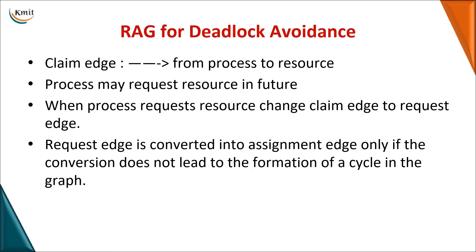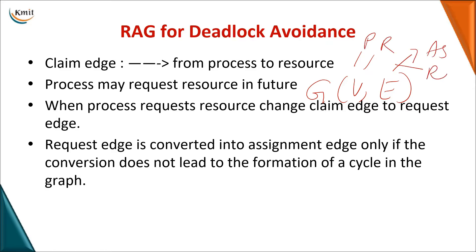Now for the resource allocation graph, we have already seen a graph with vertices and edges. In the vertices we have processes and resources, and in the edges we have assignment edges and request edges. Other than these, we have one more edge known as a claim edge, which is indicated with a dotted arrow. The claim edge goes from a process to a resource, indicating that in the future this particular process may request that resource.